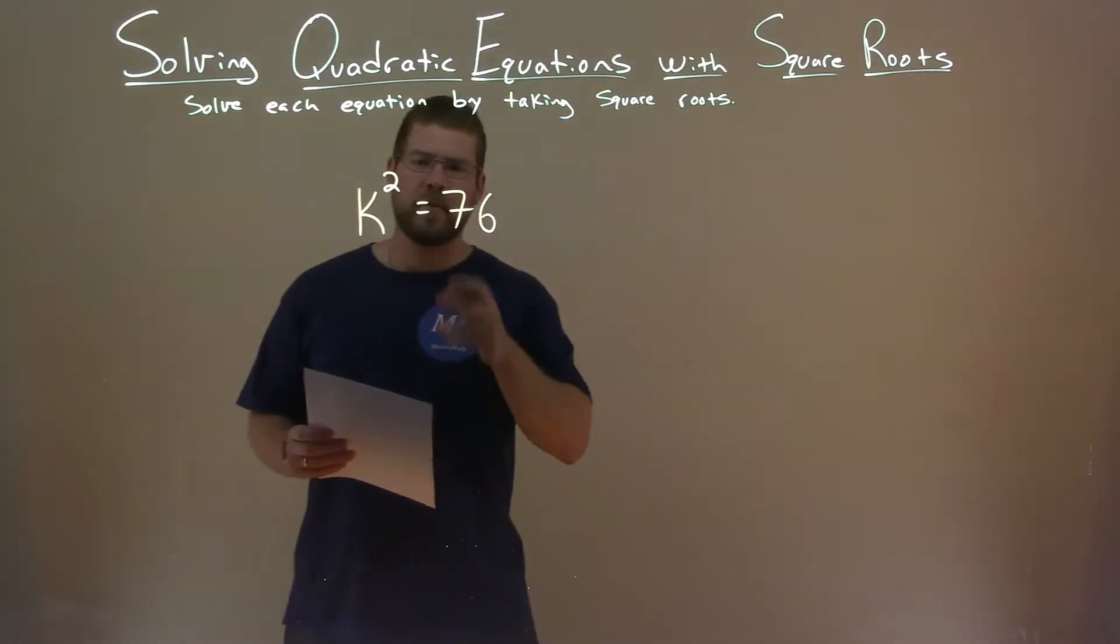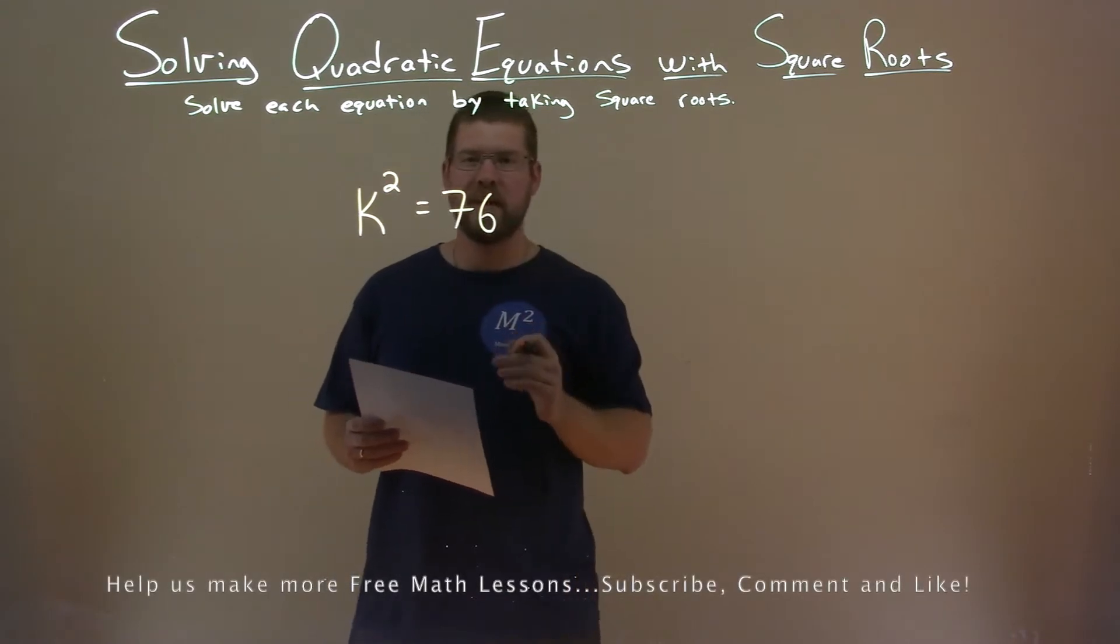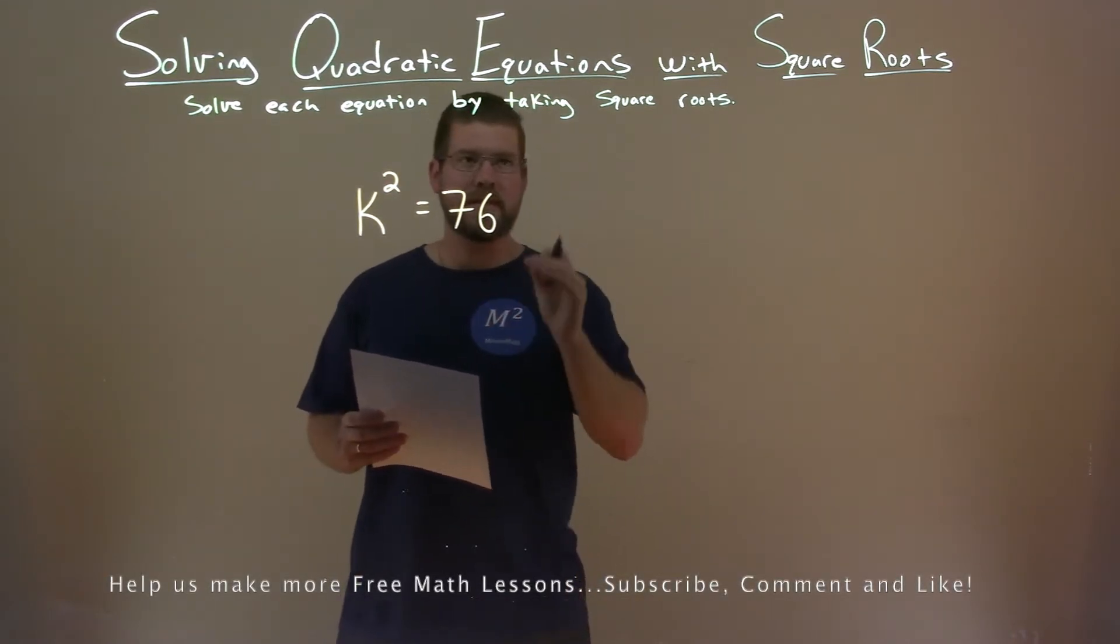We're given this problem right here, k squared equals 76, and we want to solve this equation by taking the square root.